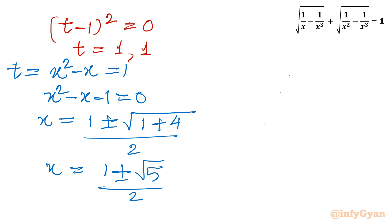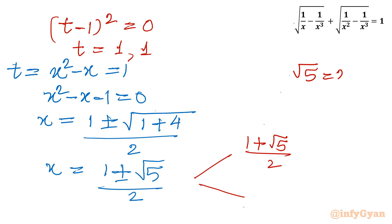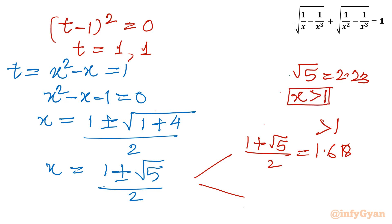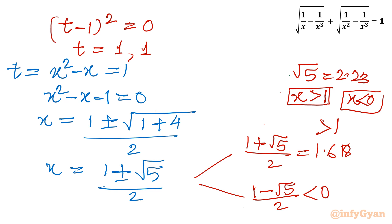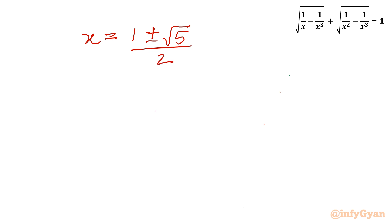Now let us verify the result. There are two values: (1 + √5)/2 and (1 − √5)/2. Since √5 ≈ 2.23, the first value is approximately 1.618, which is the golden ratio and is greater than 1 — valid. Our domain required x > 1 or x < 0. The second value (1 − √5)/2 is negative, so both solutions are accepted. Our final answer is x = (1 ± √5) / 2.